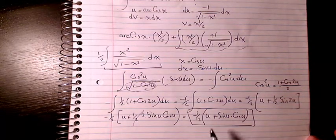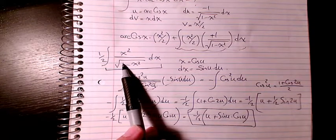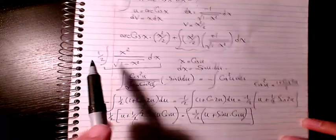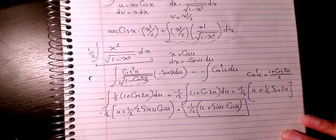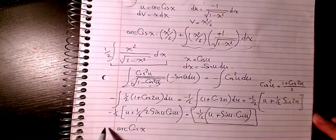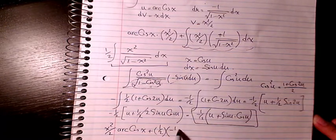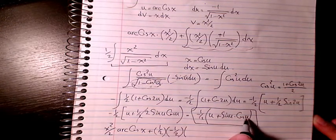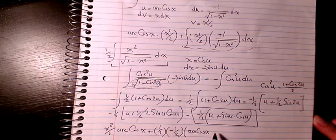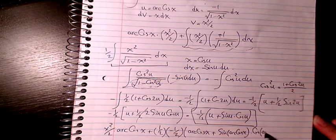This expression is the answer to the inner integral we had earlier. Now back-substituting into the full expression: since we defined x = cos(u), we have u = arccos(x). So sin(u) = sin(arccos(x)) and cos(u) = cos(arccos(x)) = x. The result becomes: arccos(x) times x squared over 2, plus 1 over 2 times negative 1 over 2 times (arccos(x) plus sin(arccos(x)) times x).